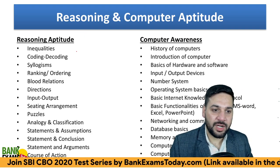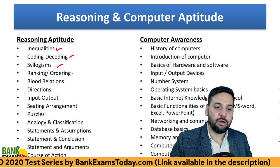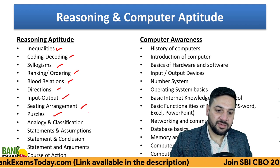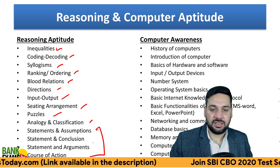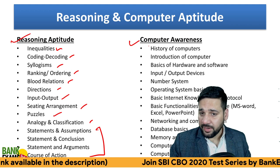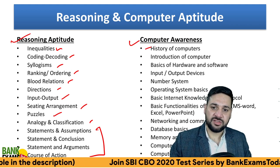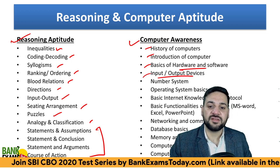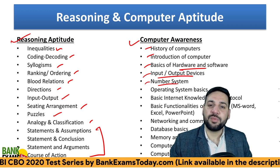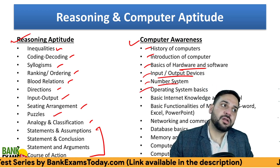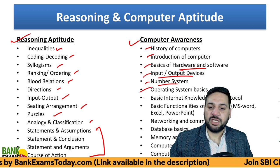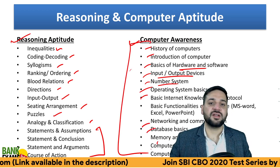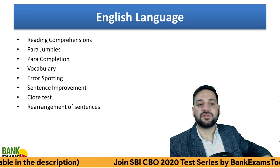In reasoning and computer aptitude, normal topics include inequalities, coding-decoding, syllogism, ranking, ordering, blood relations, direction sense test, input-output, seating arrangement, puzzles, analogy, and critical reasoning. For computer awareness, the basics will be covered: history of computers, introduction to computers, hardware, software, input-output devices, number system, operating system, network topologies, networking, and database basics. It is basic computer awareness — not professional-level knowledge.